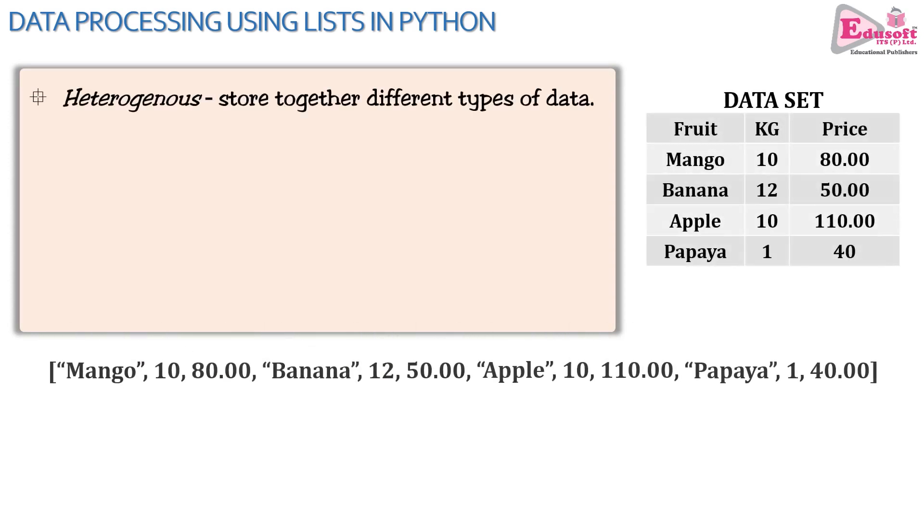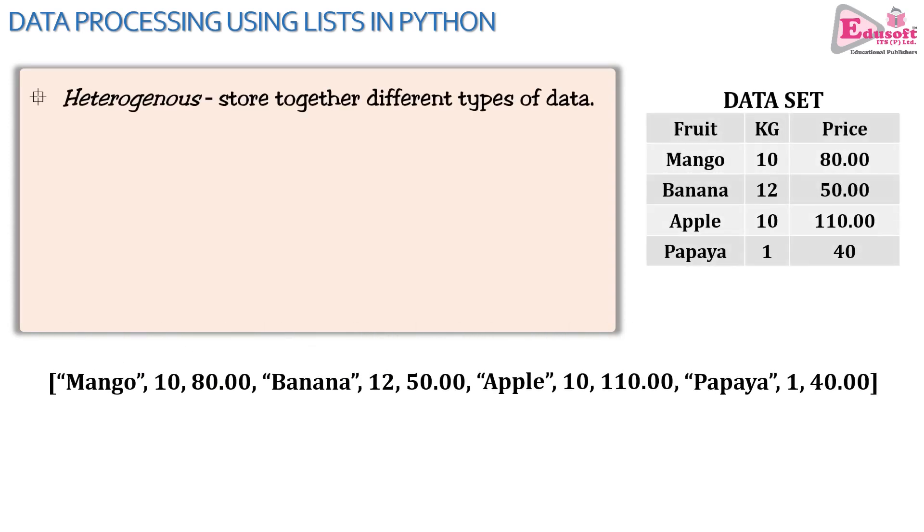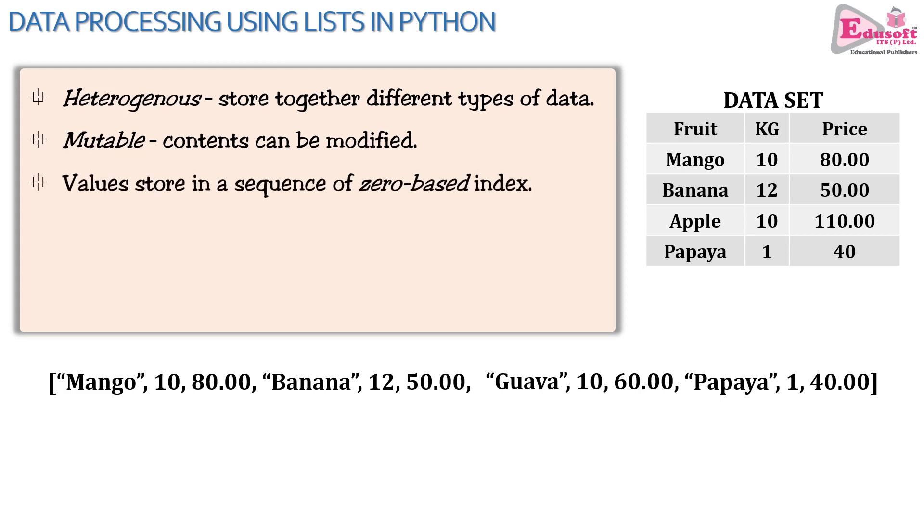First, lists are heterogeneous in nature, meaning they can store different types of data. In a list, you can store at a time a string or a float value, a boolean, a numeric value and so forth. Another characteristic of lists is that they are mutable, meaning they can be modified. There are certain data structures in Python which cannot be modified, they are called immutable, such as tuples. But lists are changeable, they can be modified, so they are mutable.